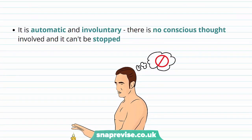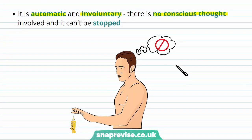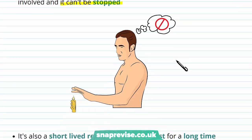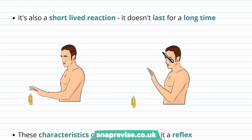We describe this reaction as being automatic and involuntary. There's no conscious thought required — you don't need to think 'oh I'm touching something hot, I need to withdraw my hand.' And you can't stop it either; it's an automatic, wired-in response that is built into our body from birth, and we can't stop the reaction from happening. It's also a very short-lived reaction — it happens quickly and doesn't last for a long time, so once it's finished, it's finished.